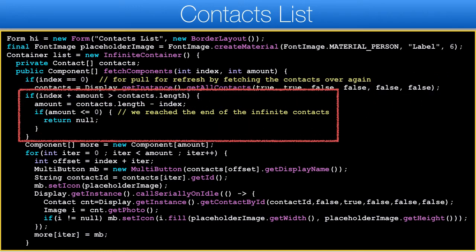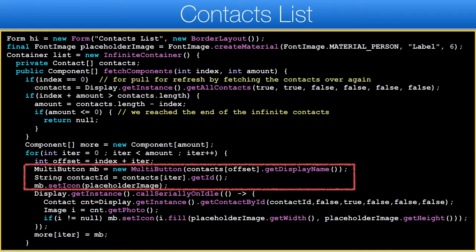The InfiniteContainer has no idea how many elements we might have, so we need to check if the amount of elements requested exceeds the total and if the index is out of bounds. If the former is true we need to reduce the amount and return a smaller array. If the latter is true we need to return null, which will stop future calls to fetchComponents unless pull-to-refresh is triggered again. The rest is close to the code we had before, where we loop and create MultiButton actions — in this case we fill them up with contact details and the placeholder image.